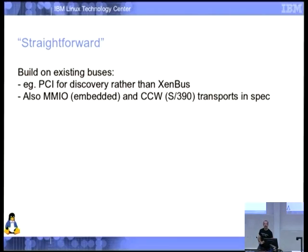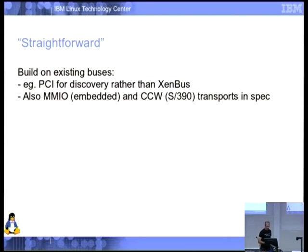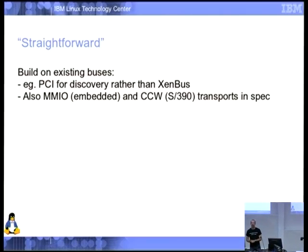There's also MMIO, an alternate bus in the standard, designed for embedded systems where there's not really a bus at all — basically just a page of registers. Generally the device tree informs the guest what it has, or even the kernel command line in Linux. And for S390, there's the CCW transport, which is much more compatible with what they do since they traditionally don't support PCI.